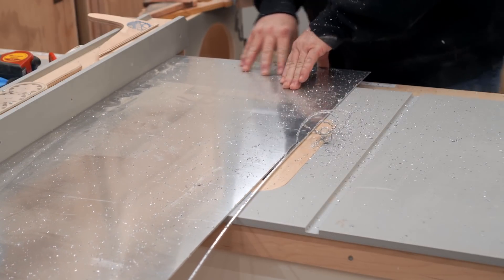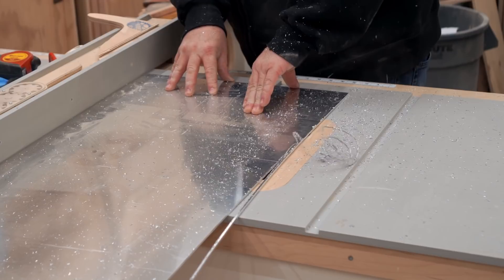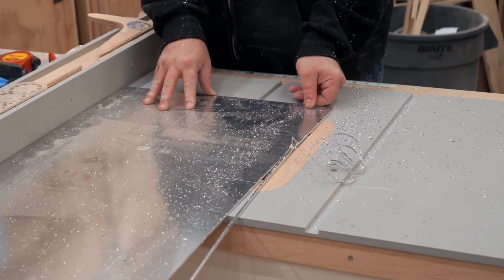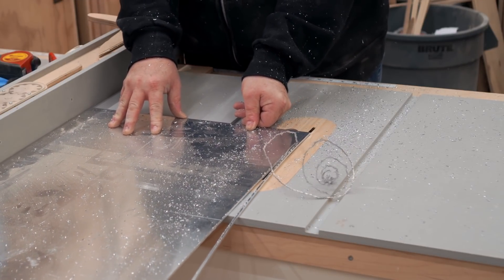Now I'm comfortable making this cut on the table saw with the fence because of the size of the piece. It's big enough that it would be difficult for the blade to kick it back. But on anything smaller, I'm going to switch to a sled instead or back to the circular saw again.